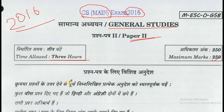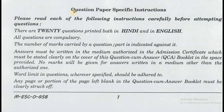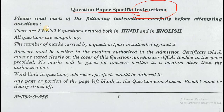Time allotted: 3 hours and 250 marks. First we will read the question paper specific instructions. Please read each of the following instructions carefully before attempting questions. There are 20 questions printed both in Hindi and in English. All questions are compulsory. The number of marks carried by a question or part is indicated against it. Answers must be written in the medium authorized in the admission certificate, which must be stated clearly on the cover of the question-cum-answer (QCA) booklet in the space provided.